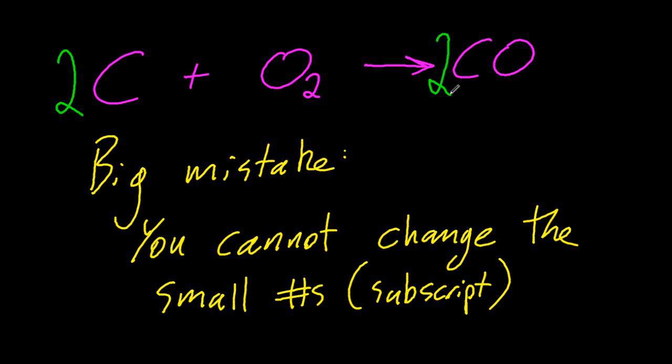But if I put a two and a two there, now it's balanced: two carbons on each side, two oxygens on each side. So what does that two mean? Well, it just means I can't be bothered to write it out twice, so I'll put a big two there.